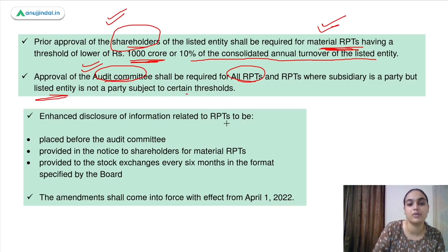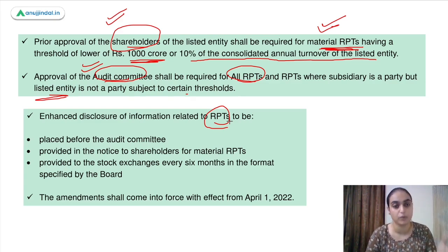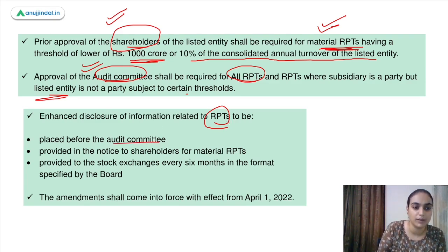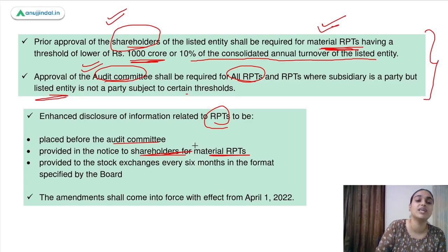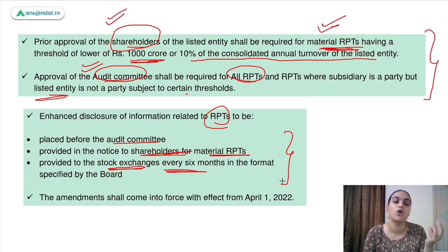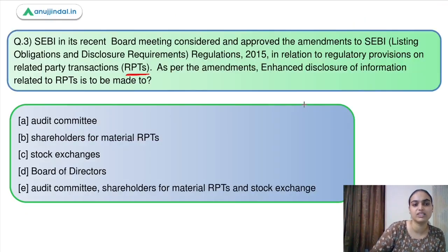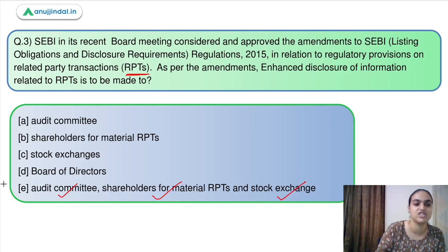Enhanced disclosure of information related to related party transactions is also required. You need to report to the audit committee about related party transactions, provide such information to shareholders for material related party transactions, and such information also needs to be shared with stock exchanges every six months. We had to identify to whom these disclosures are to be made — to the audit committee, to shareholders for material RPTs, and to the stock exchange. Answer is option E.